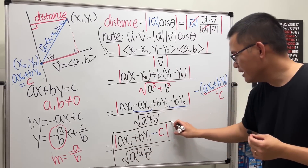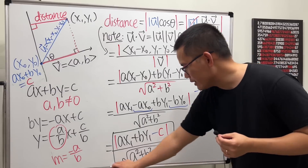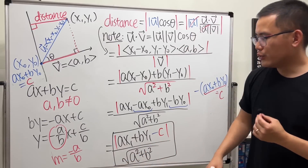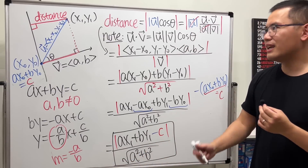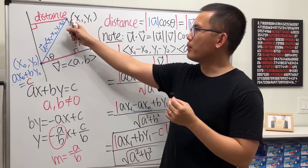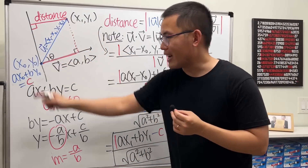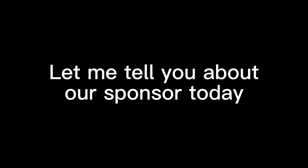So the final formula for the distance from point (x₁, y₁) to the line ax + by = c is: distance = |ax₁ + by₁ − c| / √(a² + b²). This is a very nice, clean formula.